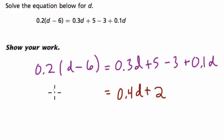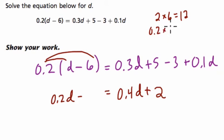On the left-hand side, I can't add any terms, but I can use the distributive property. I can multiply 0.2 times d, that's just 0.2d, minus 6 times 0.2. And you might be able to do this in your head. I think, well, what is 2 times 6? That's 12, right? So what's 0.2 times 6?